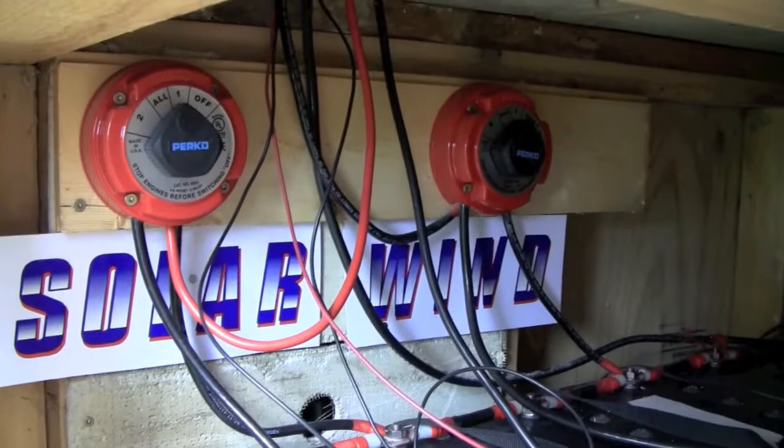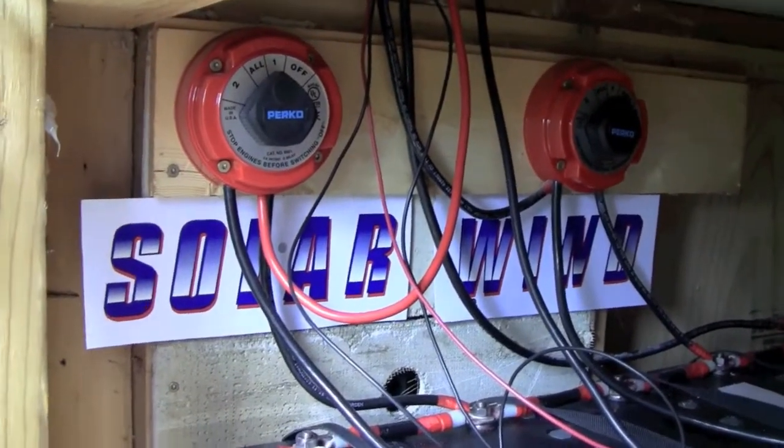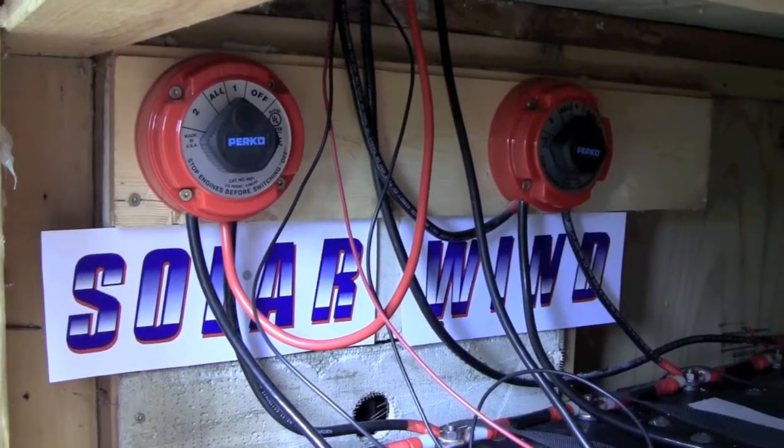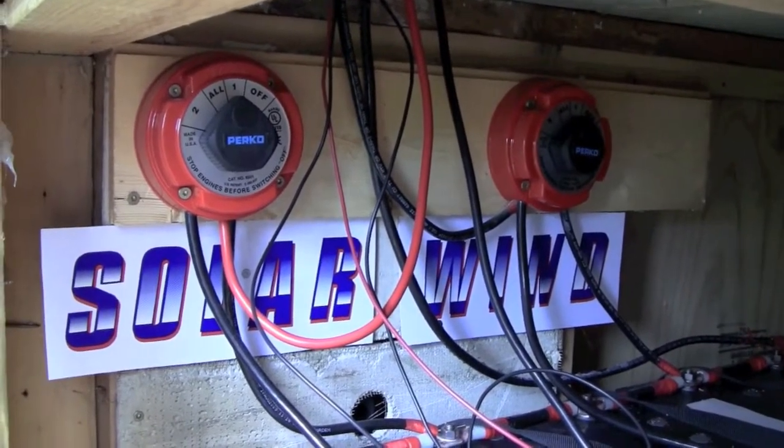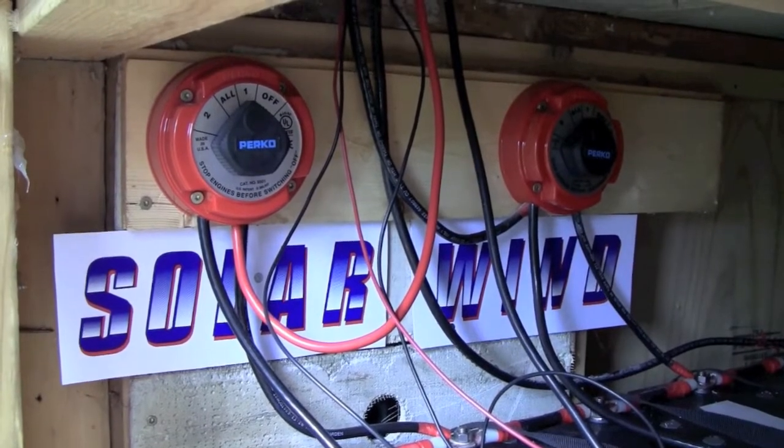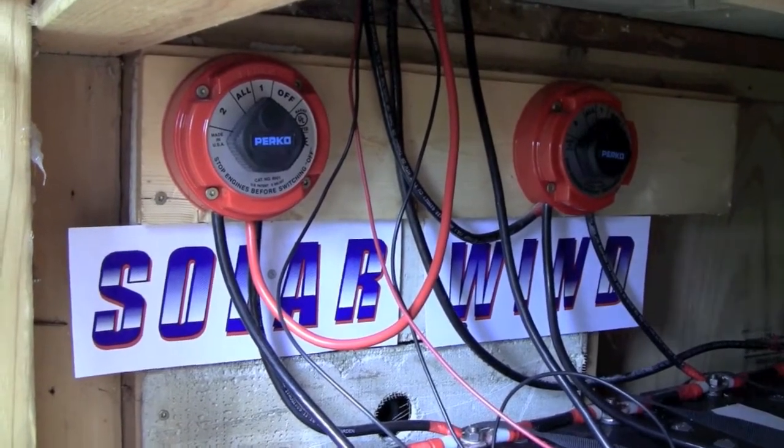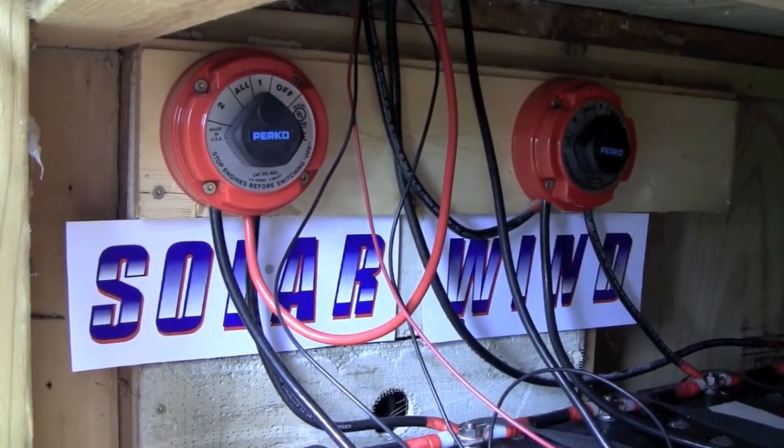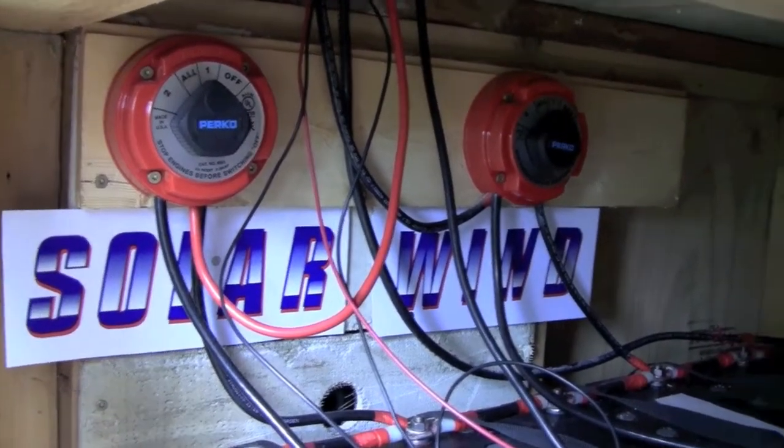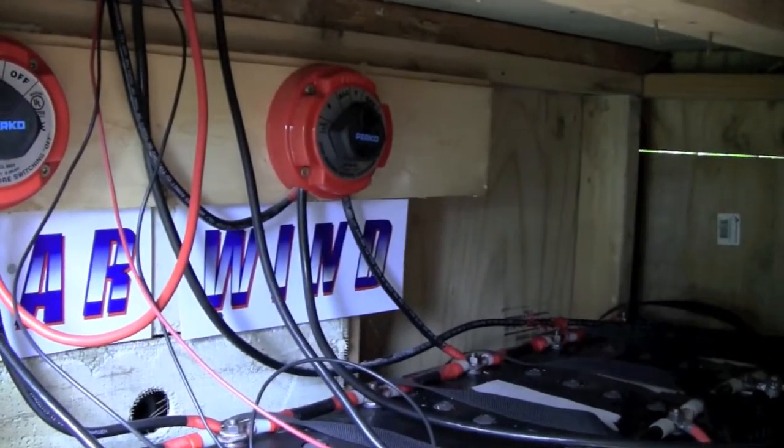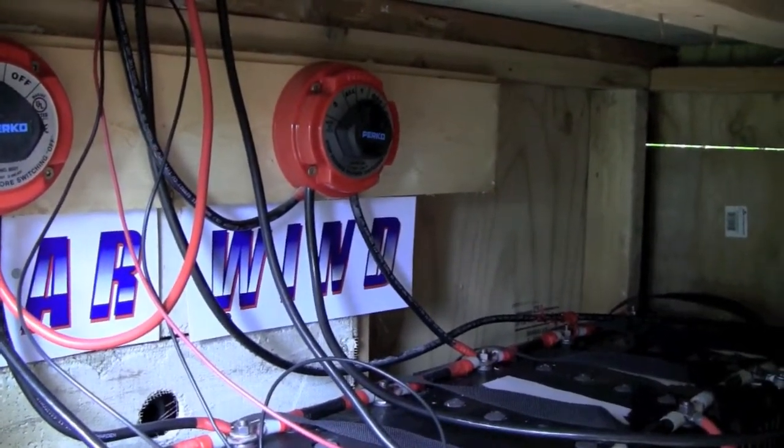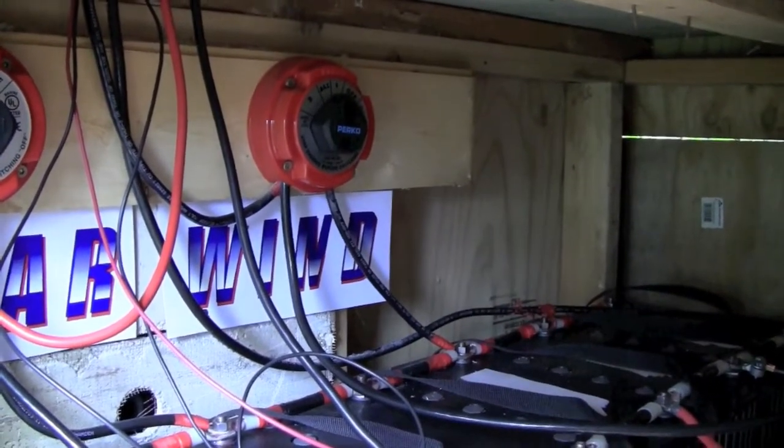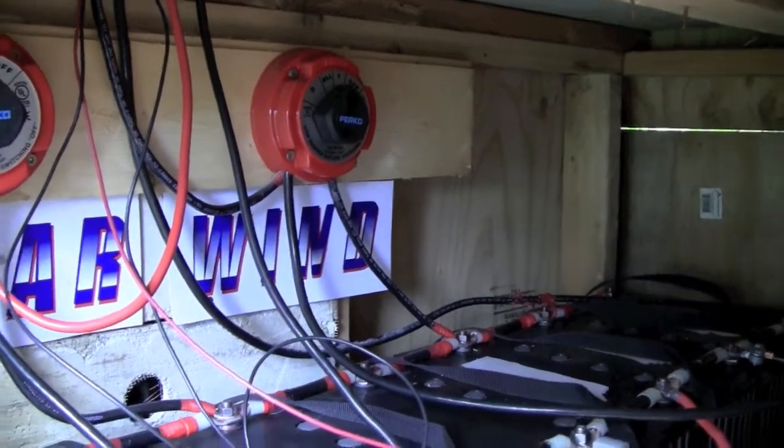We have wind and solar on the perco switches on this side. On the left is the solar, on the right is wind. The left side, when you switch to switch 1, you are charging from the solar panels to battery bank 1. If you switch to 2, you're going from the solar panels to battery bank 2. On the right perco switch from the wind turbine, again position 1 puts the power into battery bank 1. Position 2 puts them into battery bank 2.